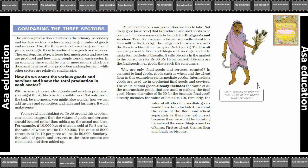Biscuits ke 4 packets Rs. 15 per packet ke hisaab se Rs. 60 mein bik rahe hain. Biscuits are the final goods — that is, the goods that reach the consumers. In contrast to the final goods, goods such as the wheat and the wheat flour in this example are intermediate goods — woh intermediate goods mein aate hain. Intermediate goods are used in producing the final goods and services.